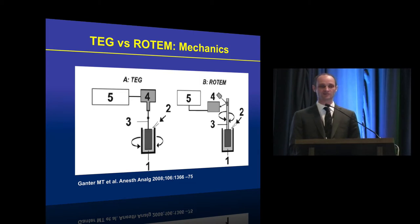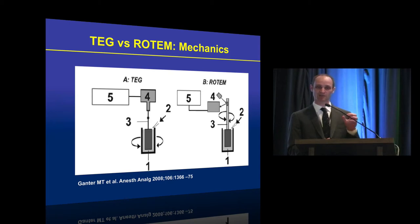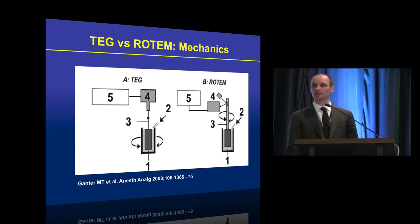With ROTEM, there are similarities but also subtle and important differences. You still place a blood sample in the cup, but instead of the cup rotating, it's the pin that rotates. When clot starts to form within the well, this affects torque on the pin, which is detected by an optical detector system, converting the signal into an electrical signal and producing a trace on the computer screen.